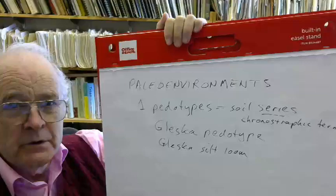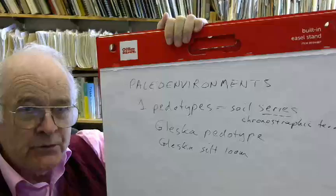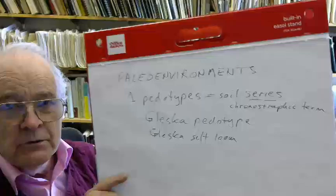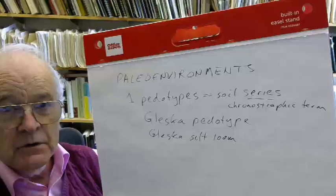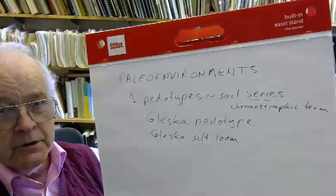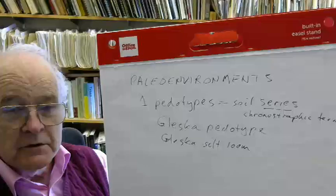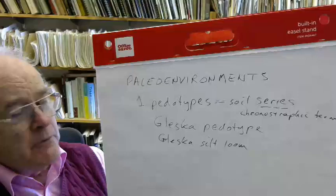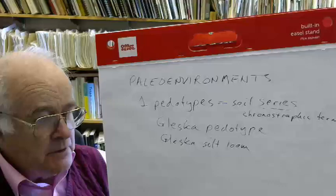For example, the Gleska pedotype. That means I can also have a Gleska silt loam for a specific profile which I've measured the grain size in. And what I mean is a soil profile, a paleosol profile, which I think is representative of others just like it within the same sort of sequence. Why did I use Gleska? Well, I used Gleska because it's a Native American word from the Sioux language. It means mottled.